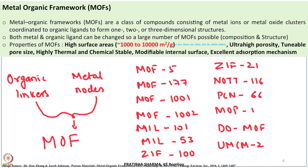Another class of adsorbent materials for hydrogen storage are metal-organic frameworks (MOFs). These are compounds consisting of a metal ion, metal oxide cluster, or inorganic cluster with high dimensionality, coordinated with an organic ligand to form 1D, 2D, or 3D structures. By changing the metal and the organic linker, a wide variety of combinations are possible, resulting in a large number of metal-organic frameworks.